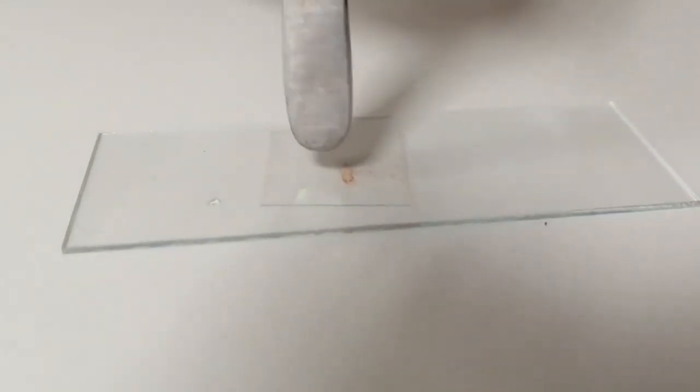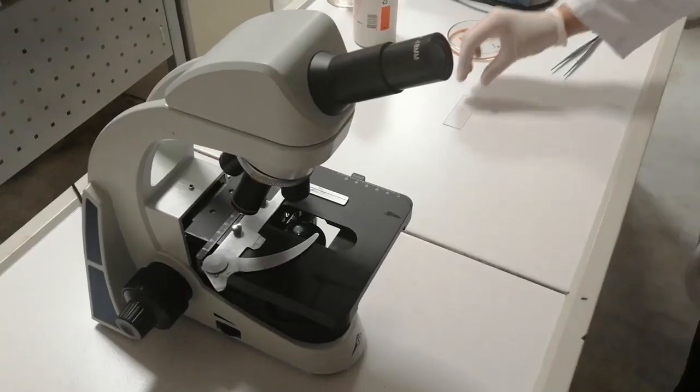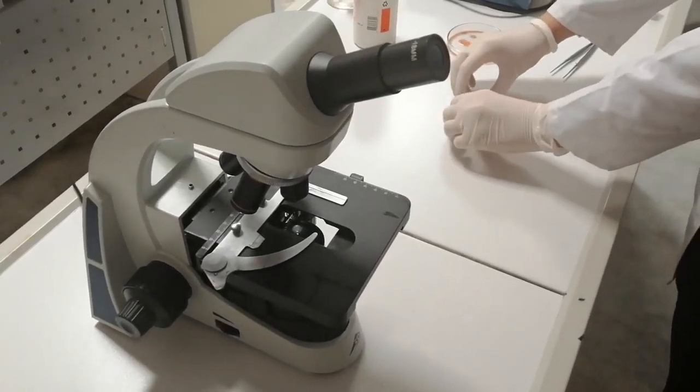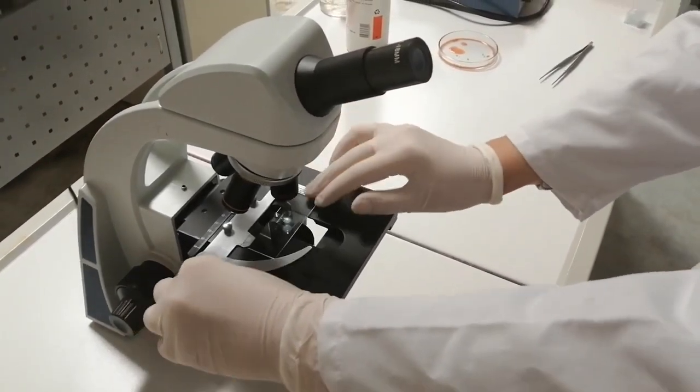Coming up next, pressing the coverslip gently with forceps in order to squash the root tip. The root tip should spread out to a diameter about half to one centimeter.